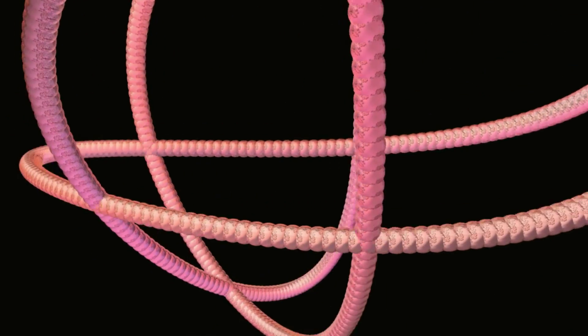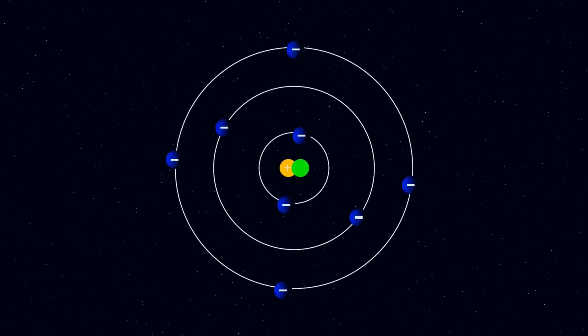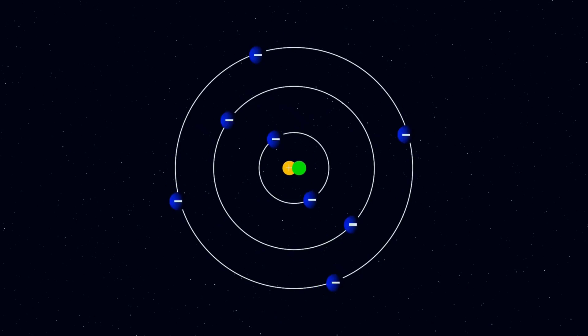According to the superstring theory, everything in the universe is made up of one-dimensional and infinitely small vibrating loops called strings. These strings vibrate in 11 dimensions.